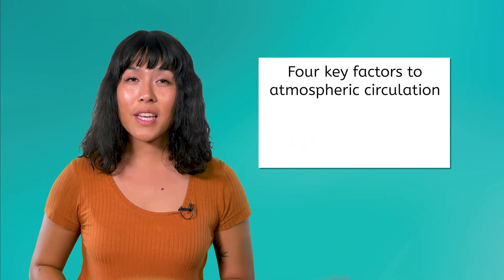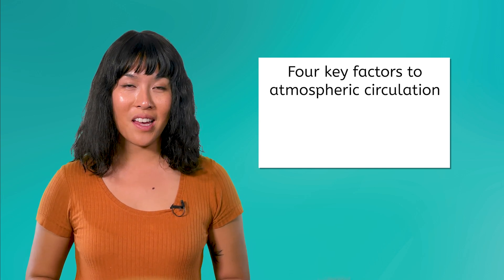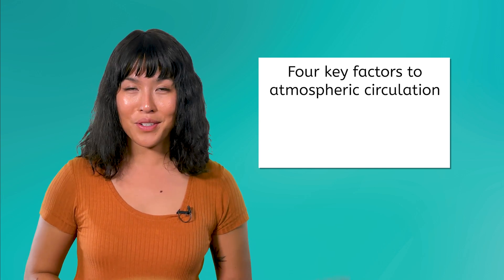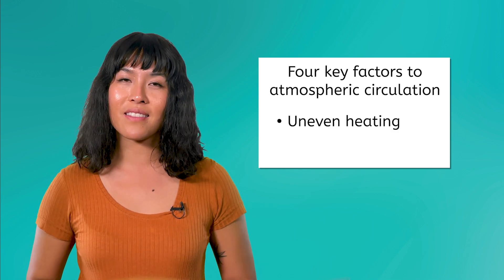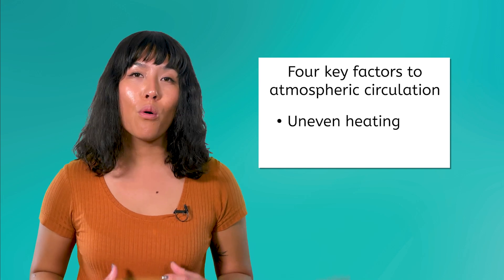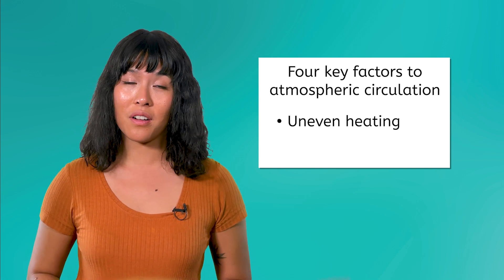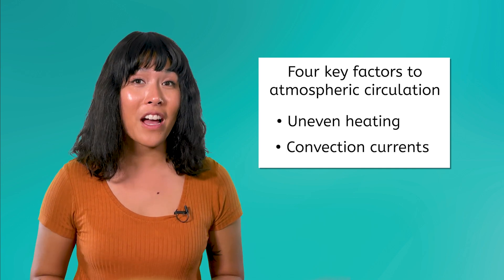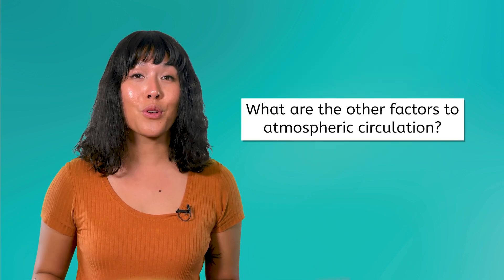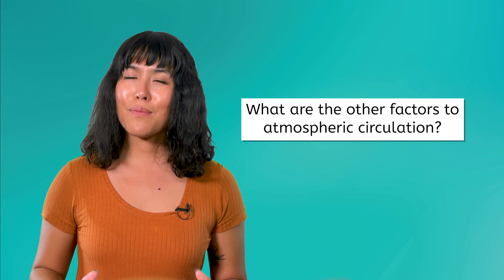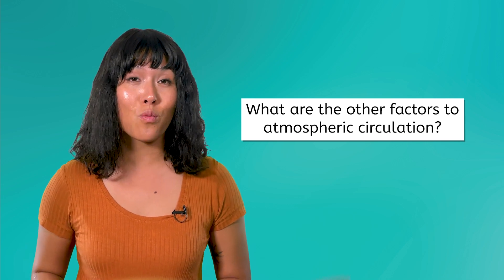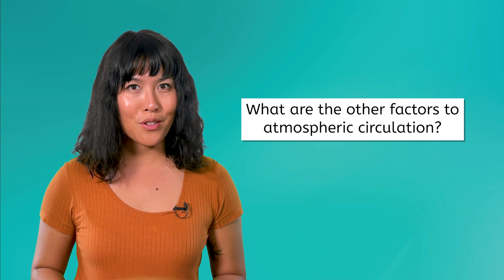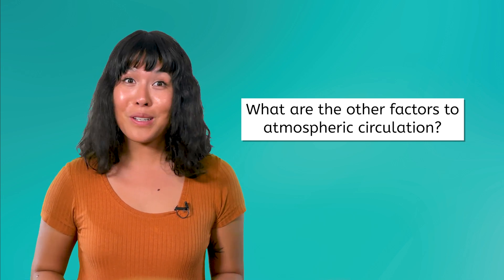There are four key factors to atmospheric circulation. We've already discussed two factors. The first is uneven heating — the equator receives more direct sunlight and is warmer, while the poles receive less direct sunlight and are cooler. The second factor is the air movement caused by convection currents. So what are the other two factors to atmospheric circulation? Think about other factors that impact weather and climate. Pause the video here to record your ideas.